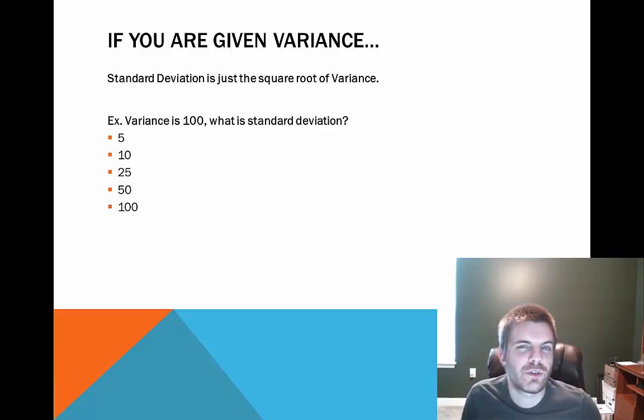Another thing that you can find out is variance. Standard deviation is the square root of variance. So if you're given a variance, you can find what your standard deviation is just by simply looking for the square root or squaring it. So the only way you can get a variance of 100 would be to have 10 squared, which is going to give you the standard deviation.